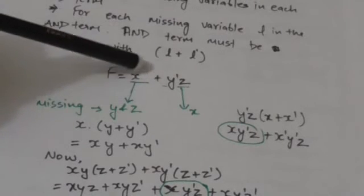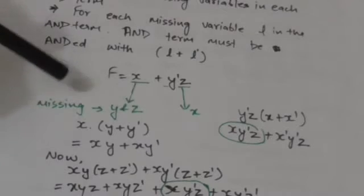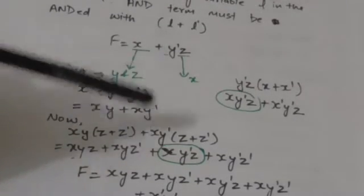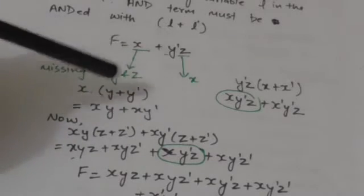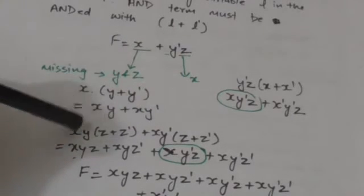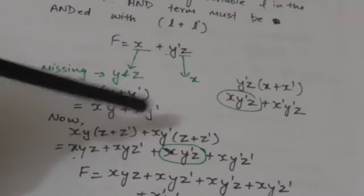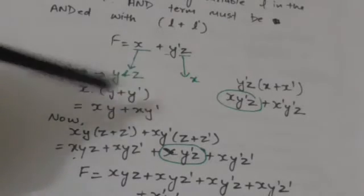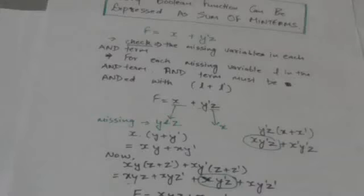Consider the function f equals x plus y'z. In the first AND term x, there are two missing binary variables: y and z. So first we will AND it with (y + y'), giving xy + xy'. Now these two terms have missing variable z, so we will AND with (z + z'), giving xyz + xyz' + xy'z + xy'z'.